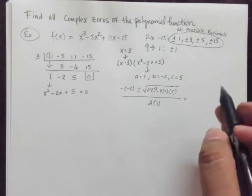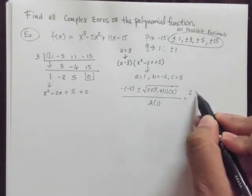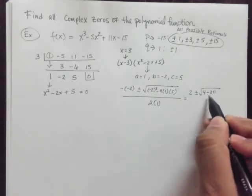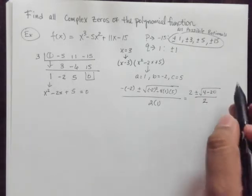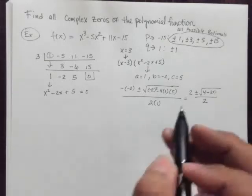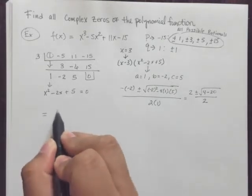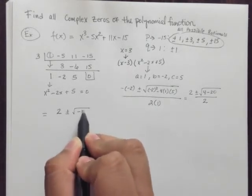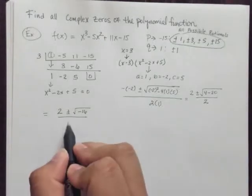So that's going to give us a positive 2, plus and minus the square root of 4 minus 20, all divided by 2. And 4 minus 20 happens to be negative 16. So let's clear that up just a bit.